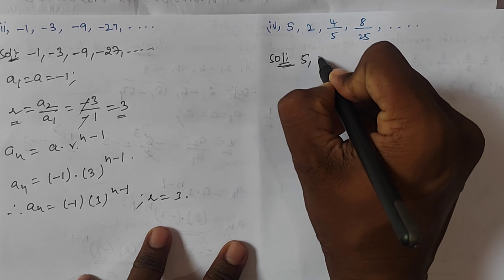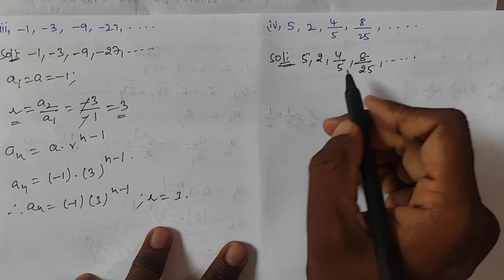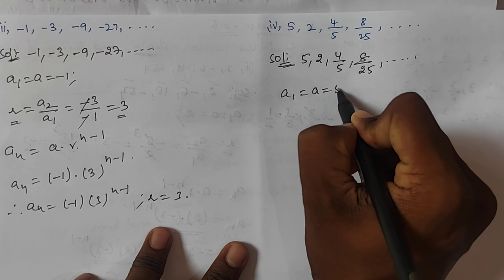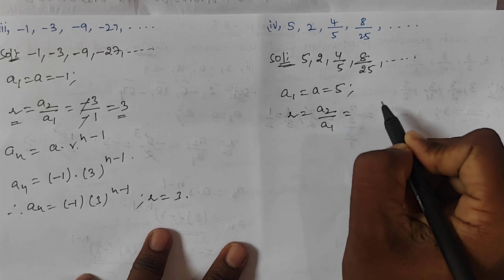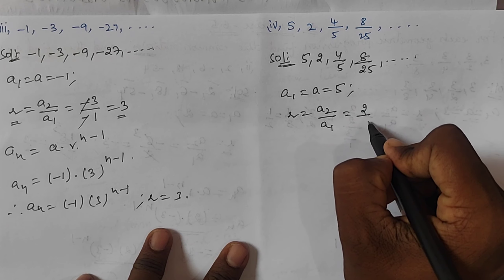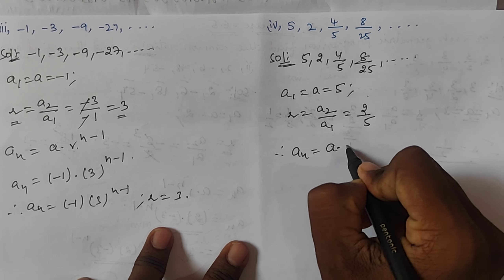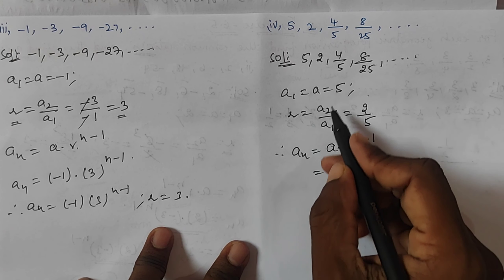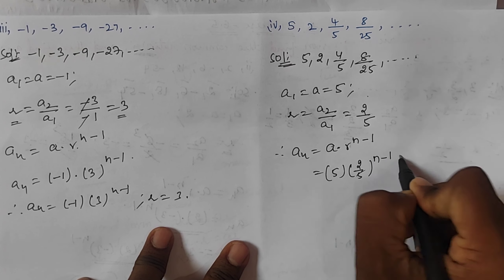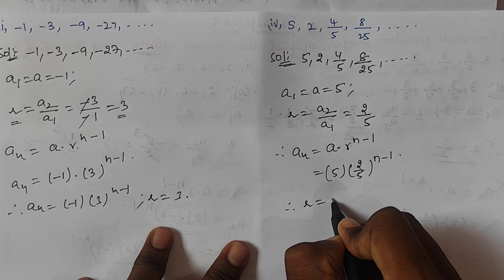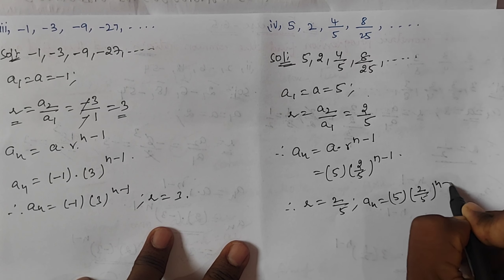Fourth GP: 5, 2, 4/5, 8/25, ... First term a = 5. Common ratio r = a₂/a₁ = 2/5. The nth term: aₙ = 5 × (2/5)^(n-1). Therefore r = 2/5 and aₙ = 5 × (2/5)^(n-1).